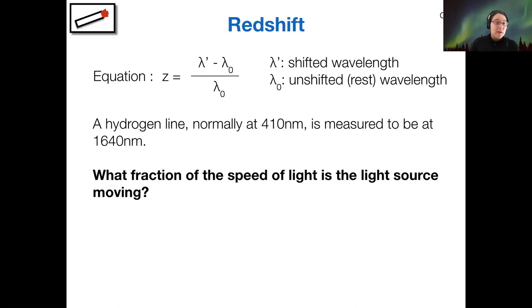Okay. Let's say we have a hydrogen line. Now we're going to use a different line. This is a purple hydrogen line. This is a 410 nanometer line and we measure it to be redshifted to 1640 nanometers. Now calculate for me what fraction of the speed of light is our light source moving? All right, if you've had time to calculate, go ahead and let me know.